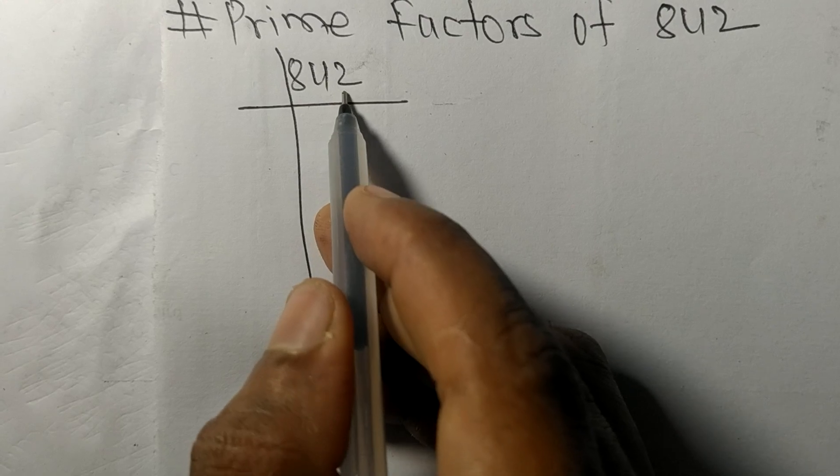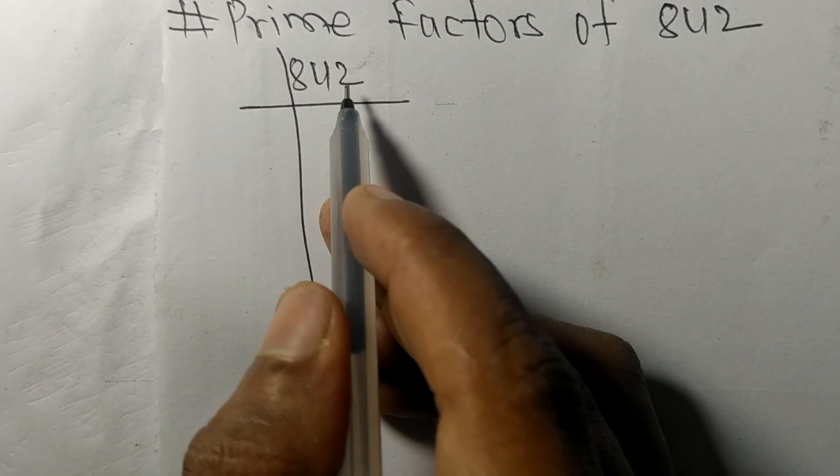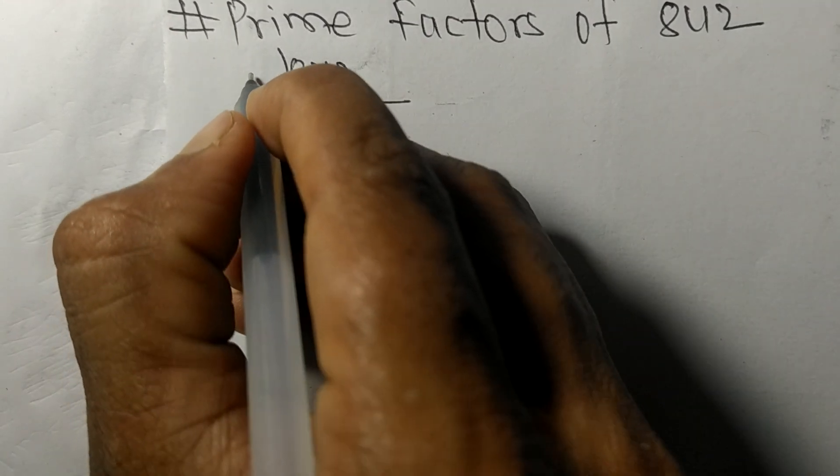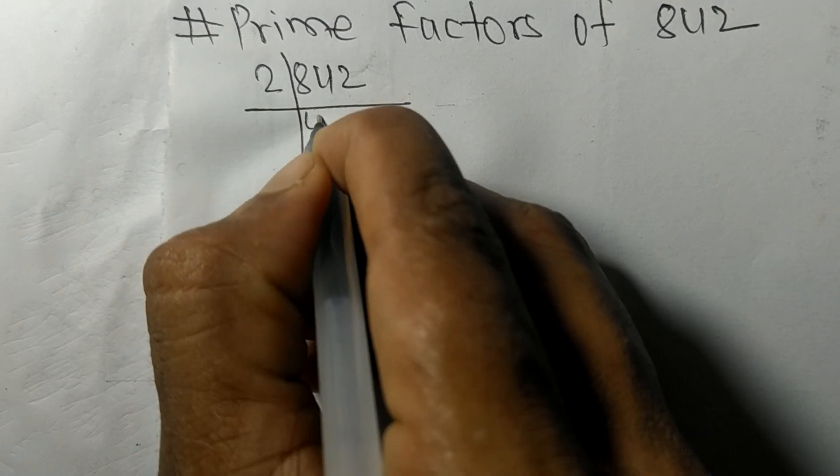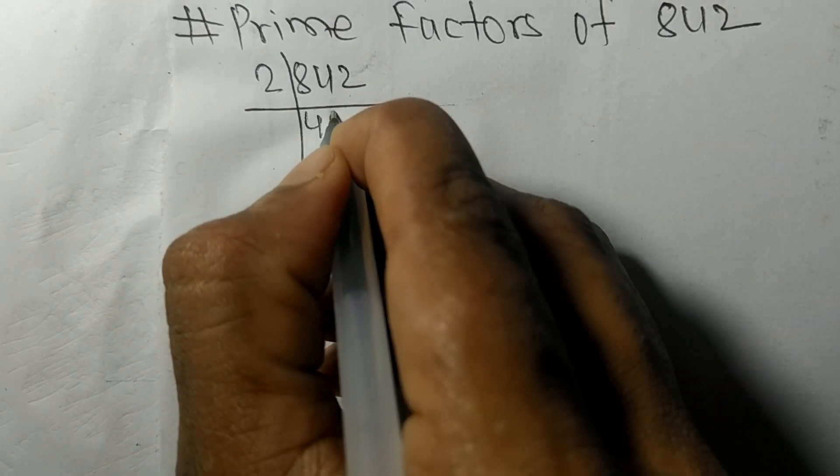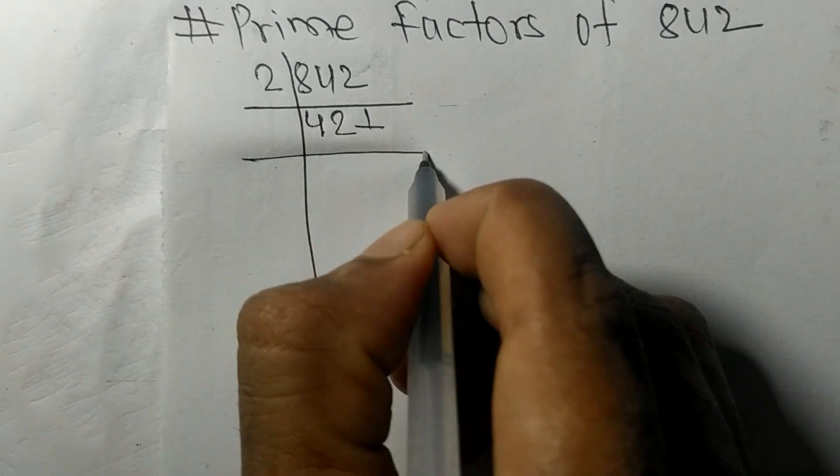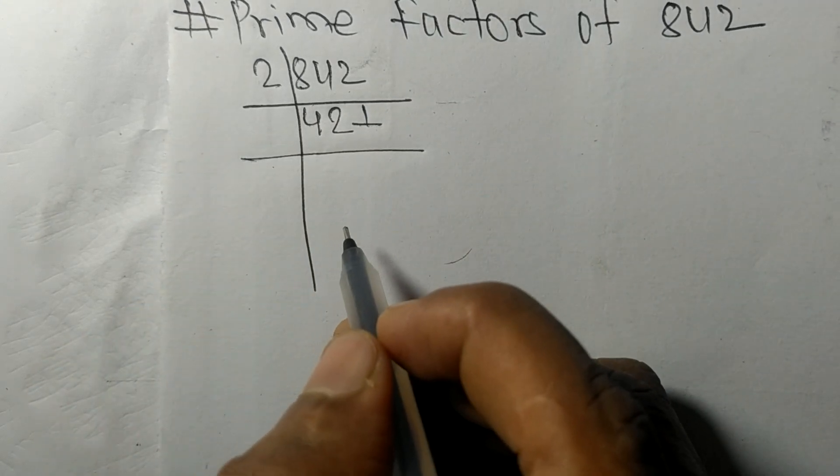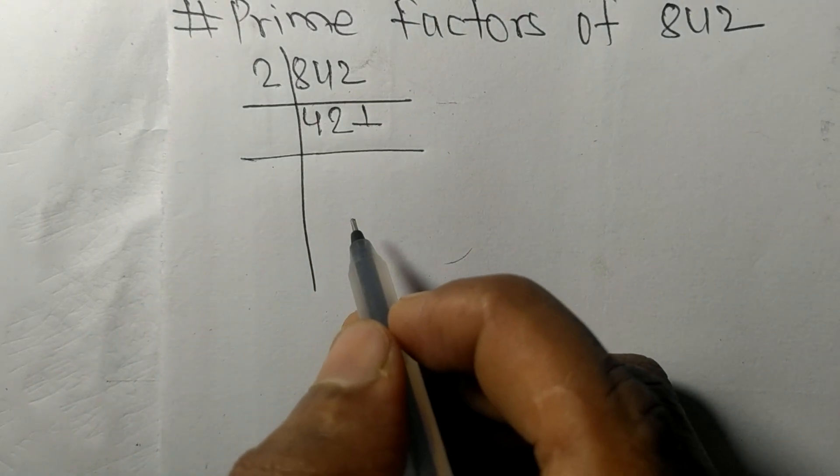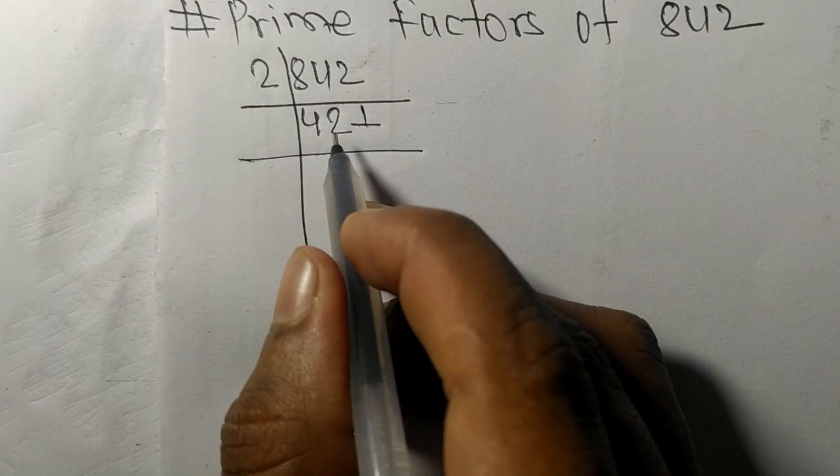At last it contains an even number, so this whole number is divisible by 2. 2 times 4 is 8, 2 times 2 is 4, 2 times 1 is 2. So now we got 421, which is a prime number.